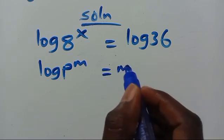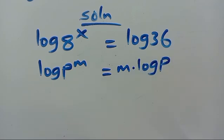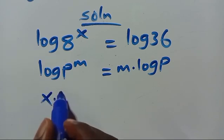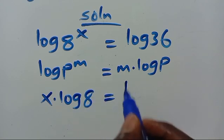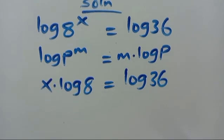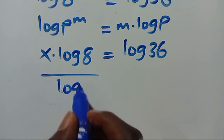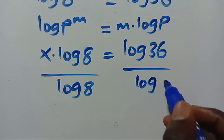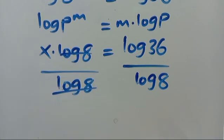We recall the rule: log P to the power of n equals n multiplied by log P. So this implies we have X multiplied by log 8 equals log 36. Then dividing both sides by log 8, log 8 cancels out.